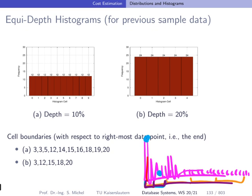The way we construct equi-depth histograms addresses this by dynamically adapting the width — that is, the boundaries on the x-axis — while keeping the height of the histogram cells the same.